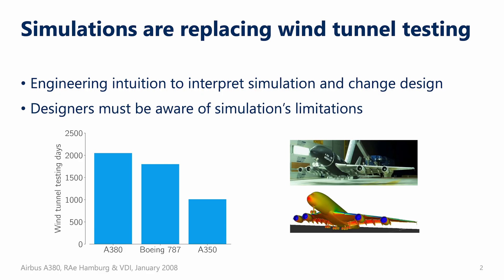Historically, engineering design has been done through a manual iterative process involving some sort of analysis, whether it's computational or experimental, and the design changes are driven by engineering intuition. As computational tools are becoming more prevalent, experimental testing has been replaced, and this allows engineers to rapidly iterate on designs using best principles.